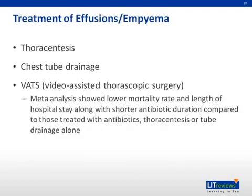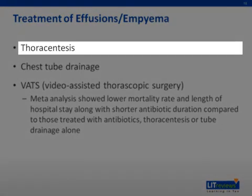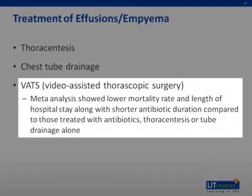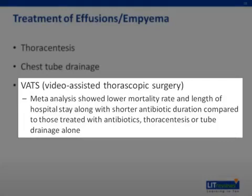When we think about treating effusions and empyema, there are several avenues we can take. Thoracentesis — removal of the fluid — is widely used in patients for simple effusions. With concern of prolonged drainage, a chest tube can be left in place to help facilitate care. VATS, video-assisted thoracoscopic surgery, can also be used to assist these patients with the removal of infectious tissue or fluid done surgically. A meta-analysis showed lower mortality, shorter length of stay, and shorter antibiotic duration for those treated with VATS compared to thoracentesis and chest tube drainage alone. Again, you would have to specifically tailor the therapy to your patient.